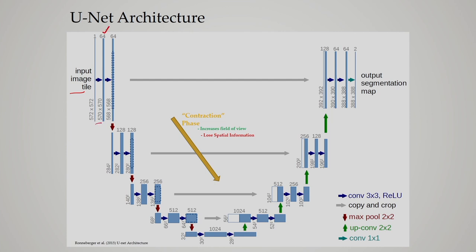After the input we do the convolutional operation with 64 feature maps, giving a size of 570×570. After this, again we do convolution with 64 kernels, giving 64 feature maps of size 568×568. After this we do the max pooling operation. Then again we do the convolution operation with size 284×284, using stride 2, and again the pooling operation. So repeatedly we are doing convolution and max pooling.